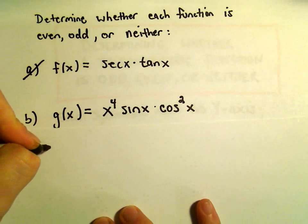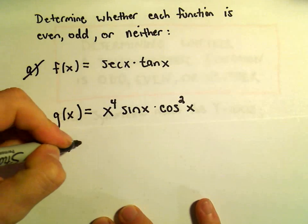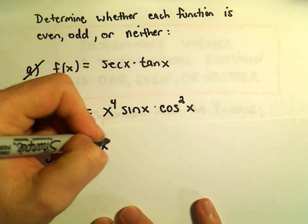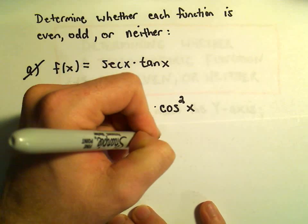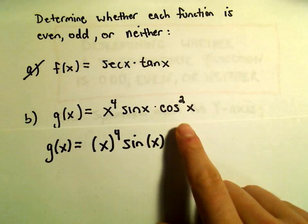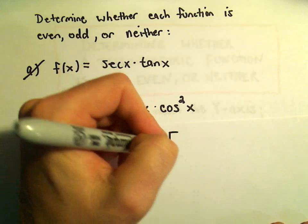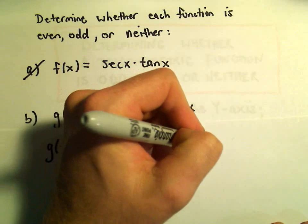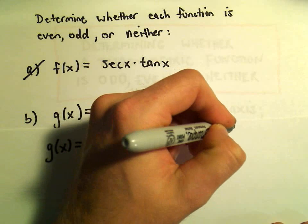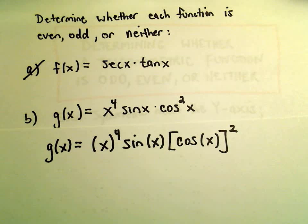I'm going to rewrite this just a little bit first. So g of x, that's going to be x to the fourth. We've got sine of x, and cosine squared x, we can just pull that out. So we'll have cosine of x all squared. It all says the same thing.